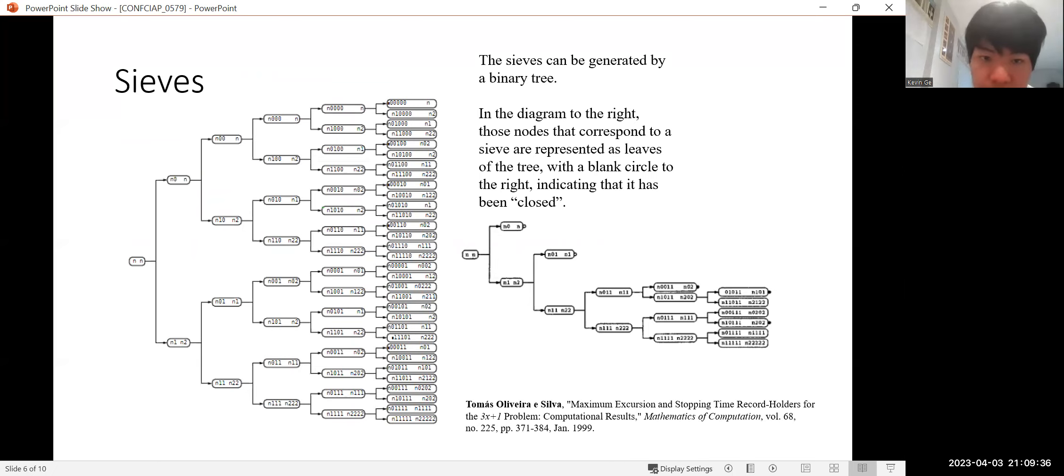So this is how we generate our sieve by a binary tree. So the tree on the left is for each node. The left column is a binary representation, and the right column is a ternary representation. So for example, n is just n and n0 means that this number ends with a zero in binary, which means it is of the form 2n plus 0.